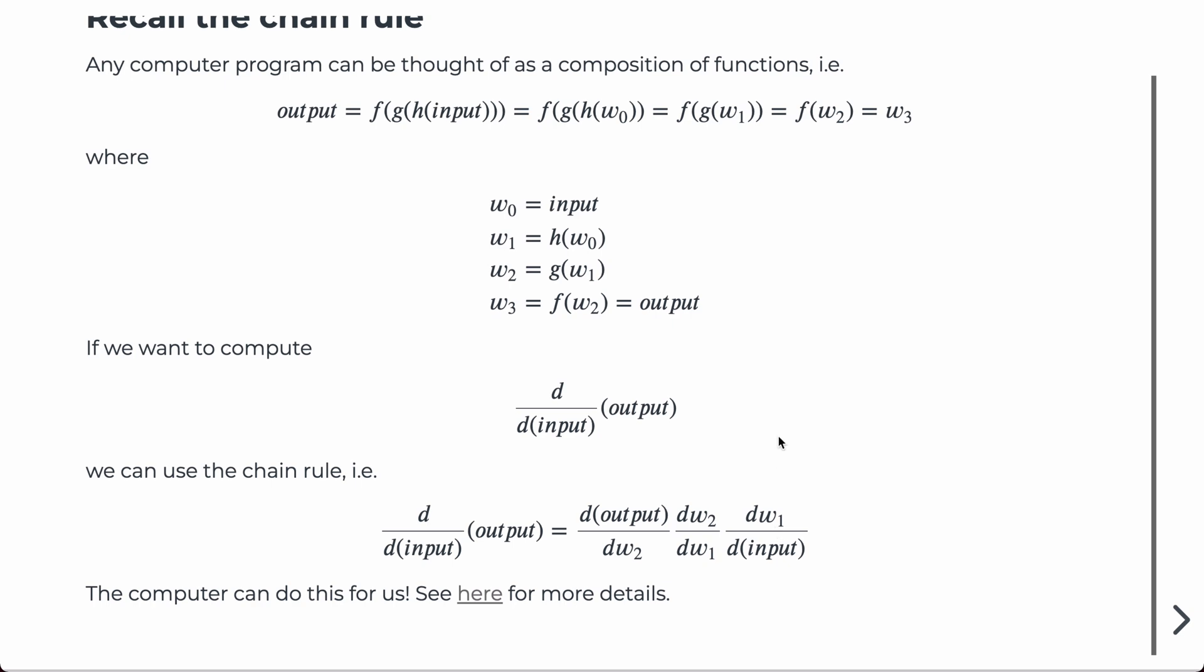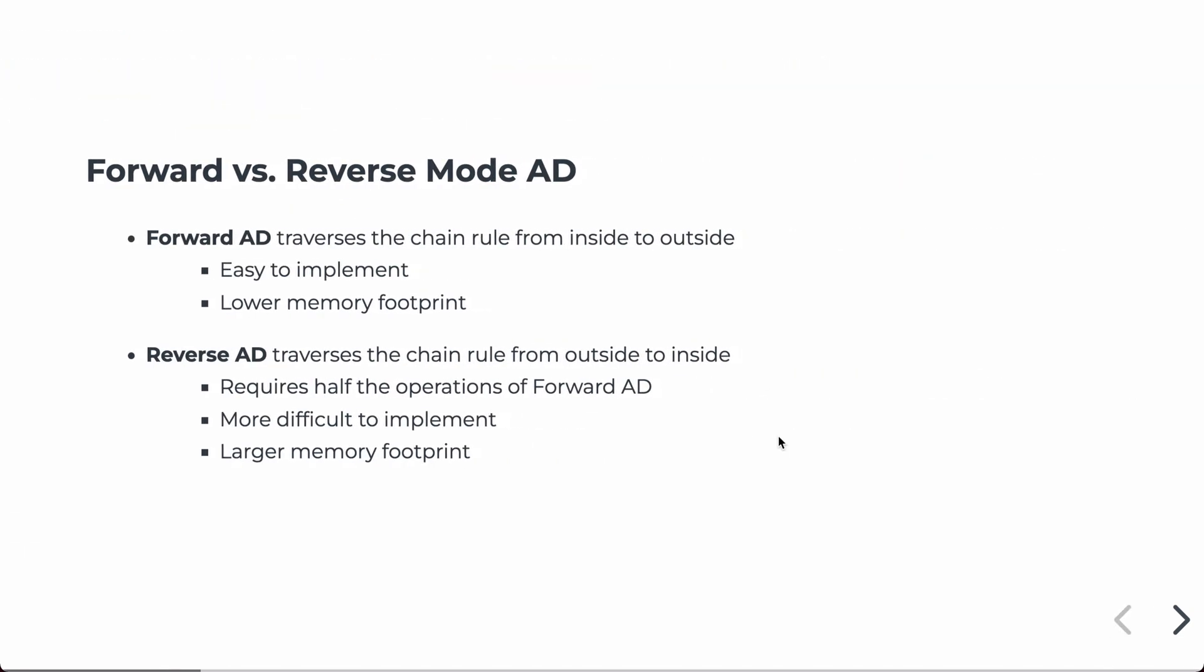And there's different implementations: forward mode and reverse mode. The details of the implementations are kind of beyond the scope of this class, but basically you can just remember that forward mode is the easiest one to implement and has the most generality in practice, with a low memory footprint. However, reverse mode requires about half the operations of forward AD, but it can be more difficult to implement and has a larger memory footprint.